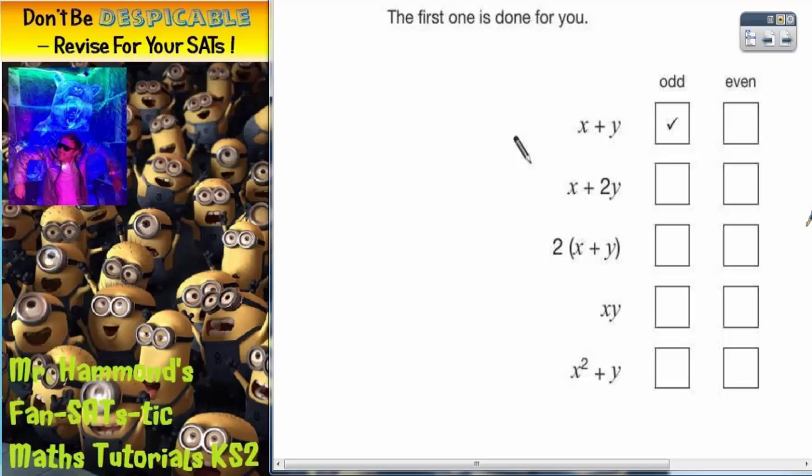So we've got several expressions: x plus y, x plus 2y, 2 lots of x plus y, x times by y, and x squared plus y.